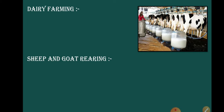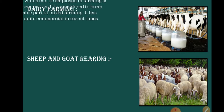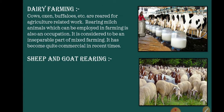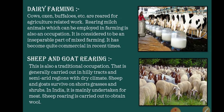Dairy farming has become quite commercial in recent times. In India it has started changing recently. Commercial dairy farming is mainly undertaken for meat and milk. We also find sheep and goat rearing. This is a traditional occupation that is generally carried out in arid, semi-arid regions and dry climates. Sheep and goat survive on short grass, shrubs and many grasses. In India it is mainly undertaken for meat, while sheep rearing is also carried out to obtain wool.